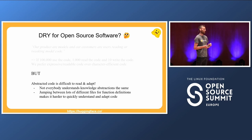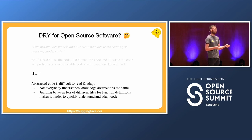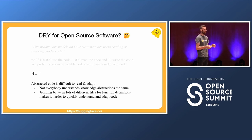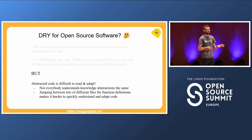Why is abstracted code a problem? Not everybody understands knowledge abstractions the same way. If you want to take a model like GPT and tweak it, you just want to see what's on the paper — not a new knowledge abstraction we created. You want easy-to-read, easy-to-understand code. And when you quickly want to understand code, you don't want to switch between 100 files — you ideally just want to stay in one file, have a quick read, and move on.